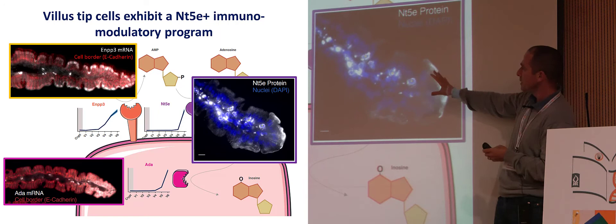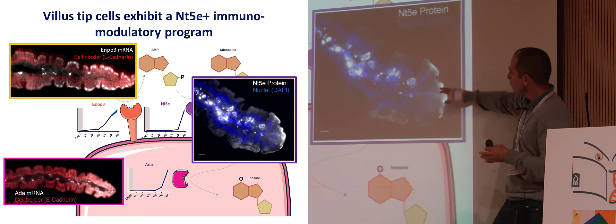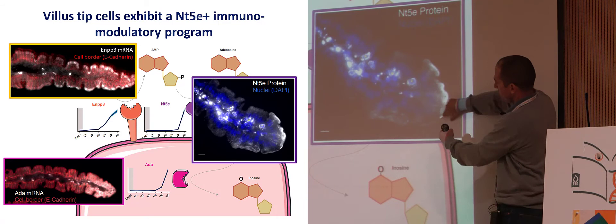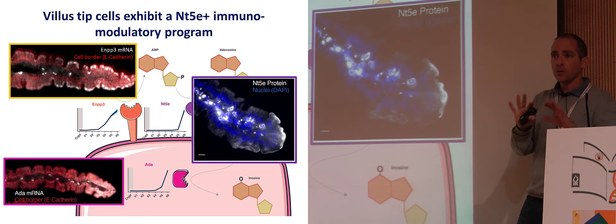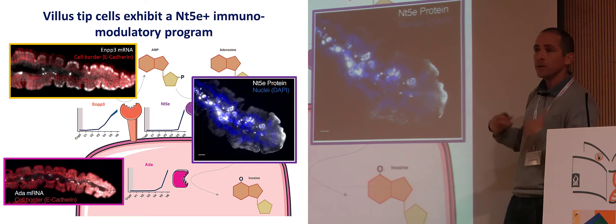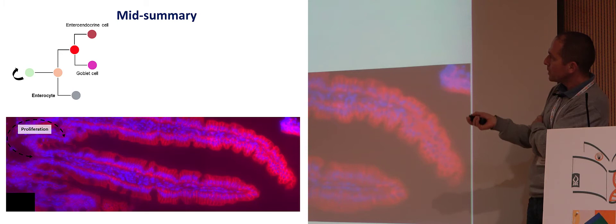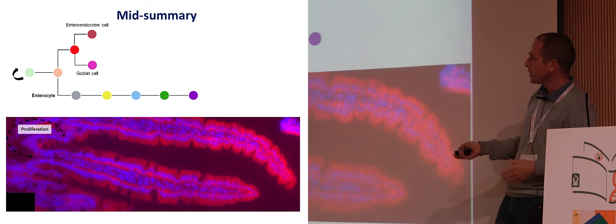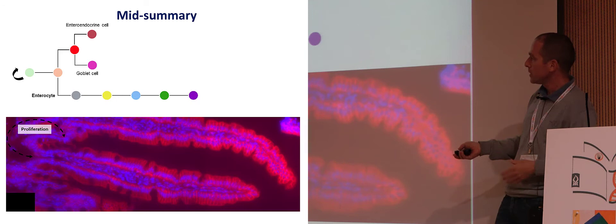Bacteria secrete a lot of ATP, and there are many immune cells in the stroma of the villus. When enterocytes are shed off, there's going to be a gap where immune cells, if they sense ATP, would start to attack. We think that these tip enterocytes create a zone depleted of ATP in order to quiet down the immune system. If you knock out NT5E, one of these genes, you get increased intestinal inflammation. To summarize: the previous picture of the gut was of terminally differentiated lineages. We think it's more complex — enterocytes are constantly trans-differentiating cells. They start at the bottom of the villus as sterilizing antimicrobial enterocytes, then shift to absorption of amino acids, carbohydrates, and lipids, and at the very tip they have this immune modulation with the purinergic metabolism program.